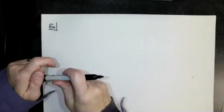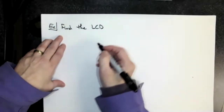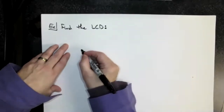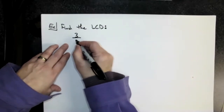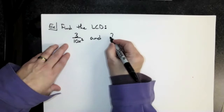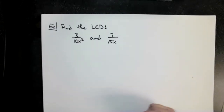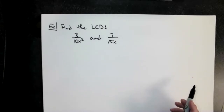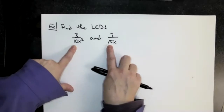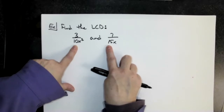They're going to ask you to find the least common denominator and give you two fractions — starting with simple ones like 3 over 10x squared. They're not going to have you add or subtract yet; they're just focusing on whether you can find that least common denominator. You're going to take the coefficients and find the least common multiple of 10 and 15 — the smallest number that both 10 and 15 go into.